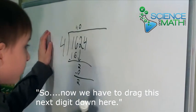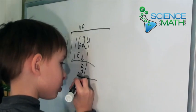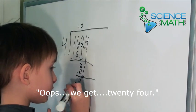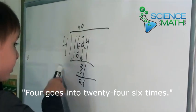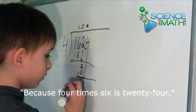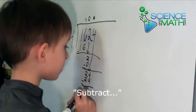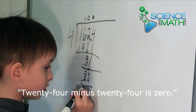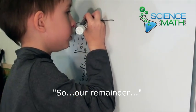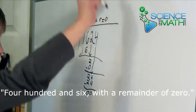We have to drag this next digit down to get down here. I'm going to take 24, 6 times. 24 times 6 is 24. 24 minus 24 is 0. So our remainder is 0. The answer is 406 with a remainder of 0.